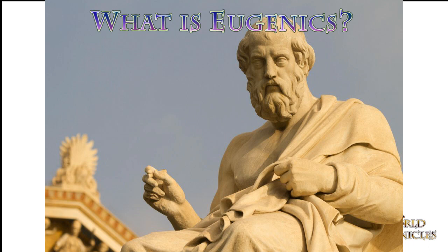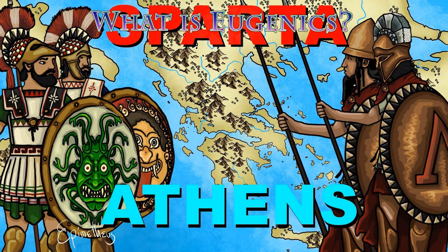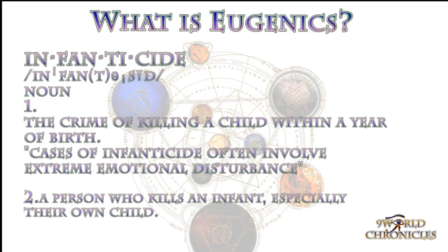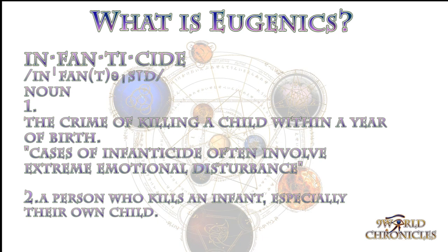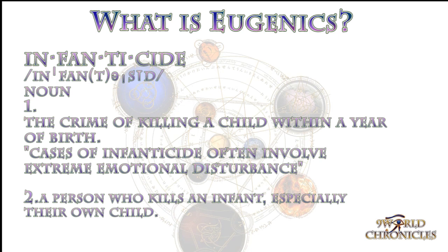He wanted to control marriages and have this whole idea about analyzing genetic inheritance. Other ancient civilizations such as Rome, Athens, and Sparta practiced infanticide on a regular basis. They had trials for infant children who were typically bathed in wine and often left out to the exposure of nature to see which children would ultimately survive, and those were deemed to be the strongest, while those weaker children were allowed to die out.